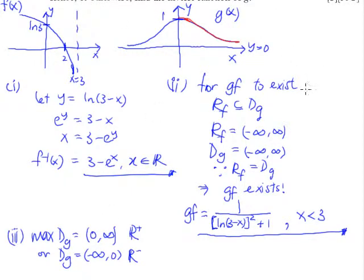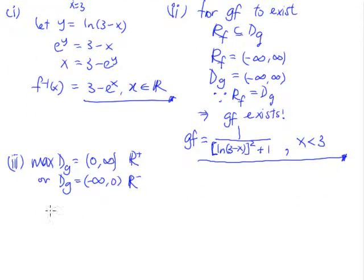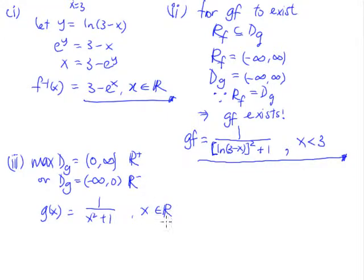The next thing is to find the inverse of g. g(x) equals 1 over x squared plus 1. We let y equal this, then reciprocate both sides. We can scroll down: x squared equals 1 over y minus 1. Taking the square root of both sides, we get plus or minus the square root of 1 over y minus 1. We choose either positive or negative — it's up to you.